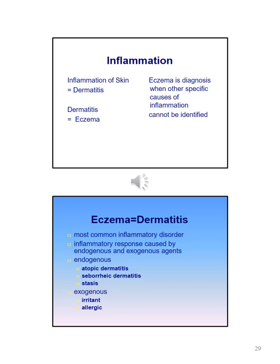Atopic, seborrheic, and stasis dermatitis are caused by endogenous agents. Irritant and allergic type dermatitis are caused by an exogenous agent.